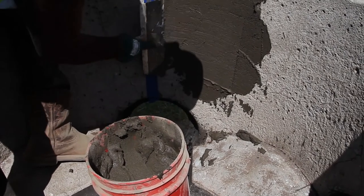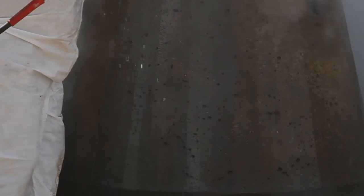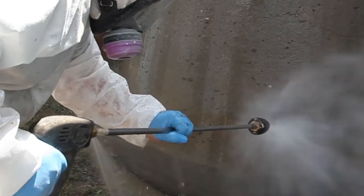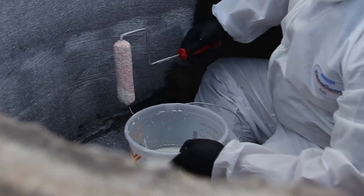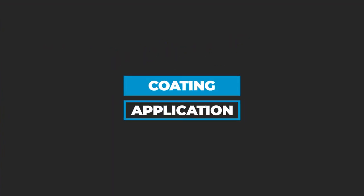If the entirety of the structure has been resurfaced, a secondary pressure washing should be performed in a smooth, even motion, and in a crosshatch pattern to ensure even coverage and to prevent runs or sags in the coating. An application of a penetrating primer may be applied to reduce moisture-vapor transmission. The structure is now ready to receive the coating application.